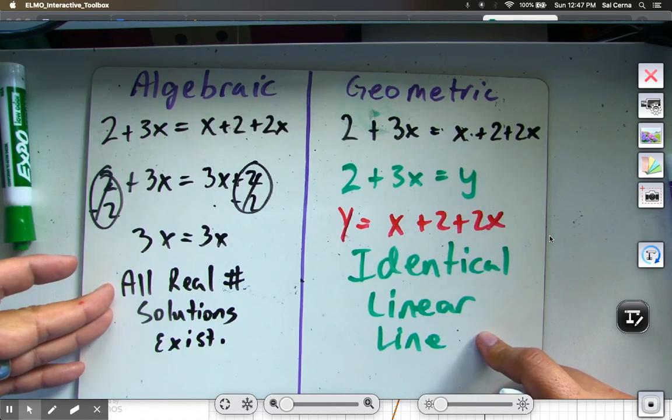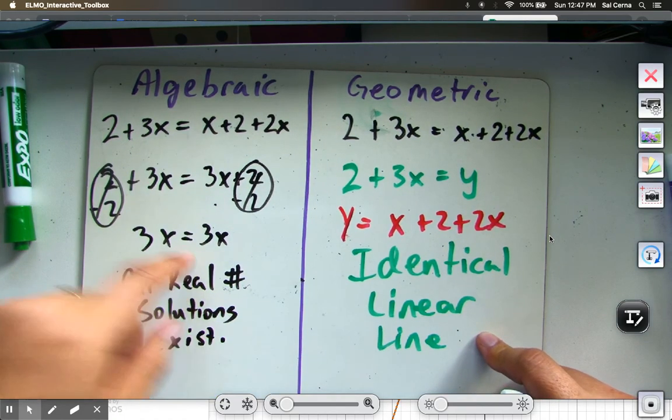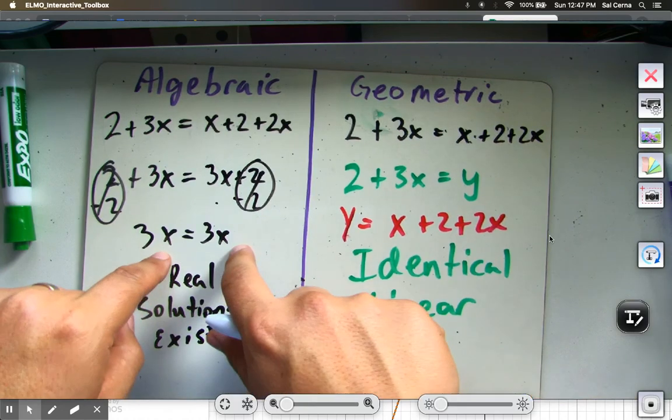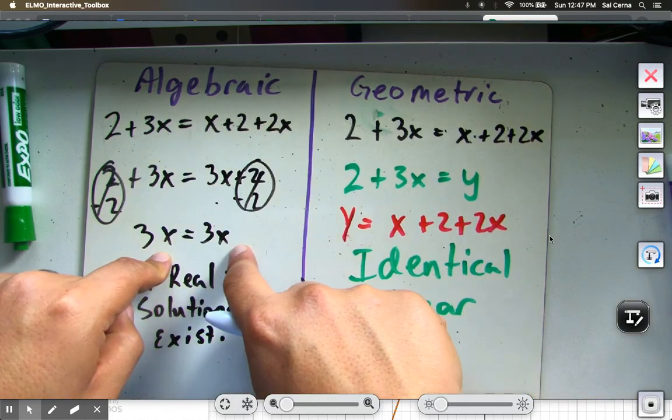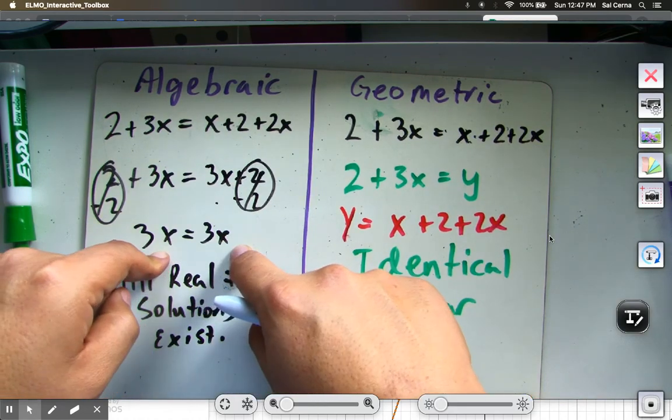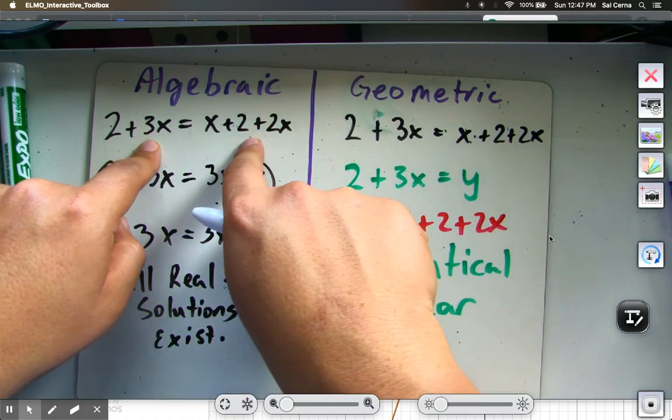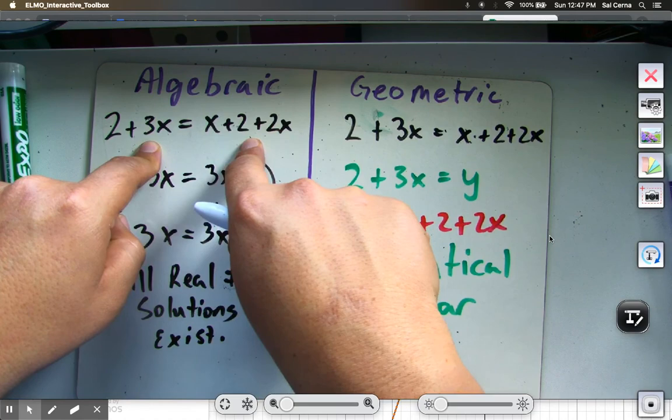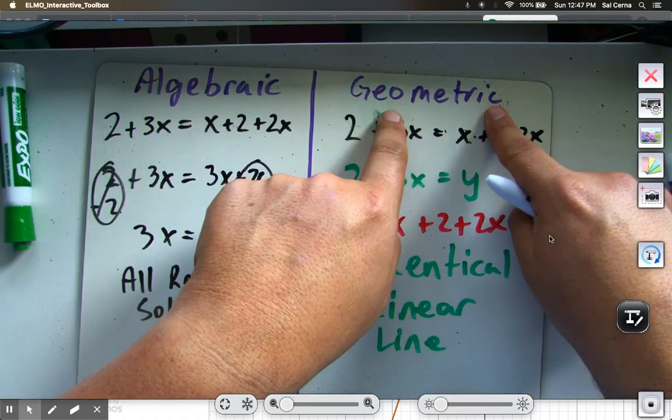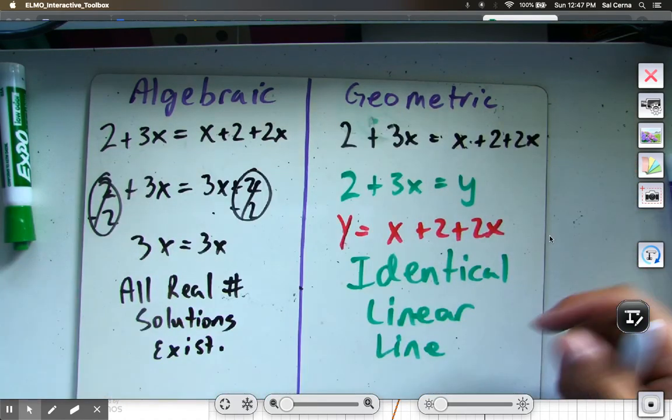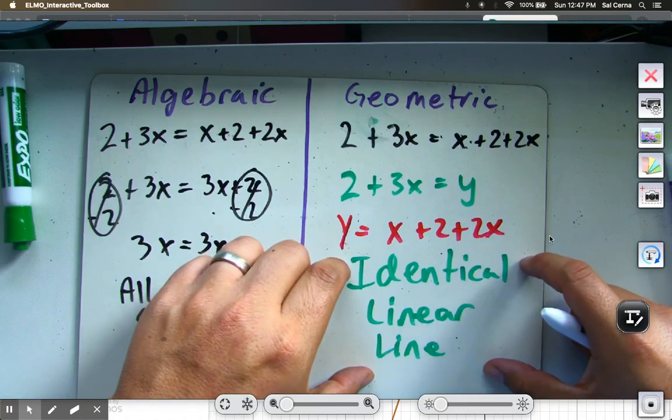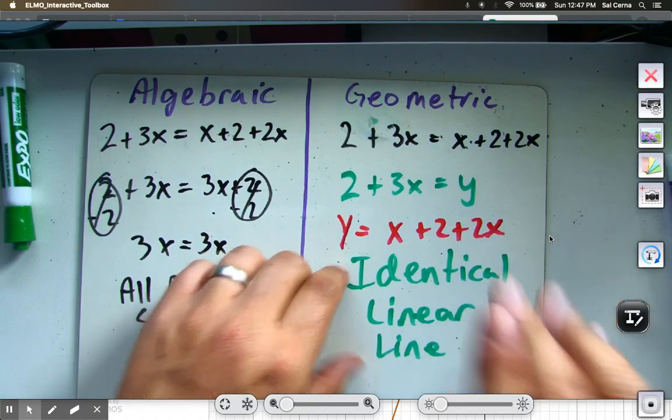Lo que se refiere aquí a la respuesta es de que puedes escoger cualquier número real y siempre va a salir con la misma respuesta. Que viene siendo que estas dos expresiones son idénticas. Y cuando las resuelvo geométricamente, saco la gráfica, la línea recta es idéntica, uno sobre la otra.